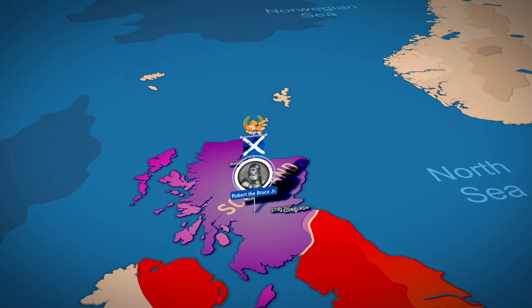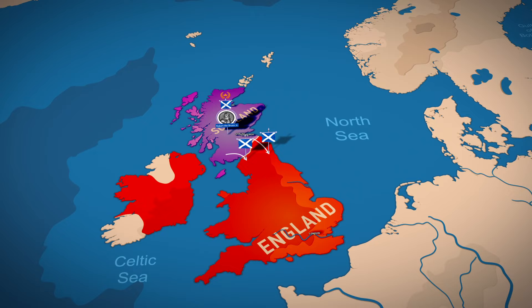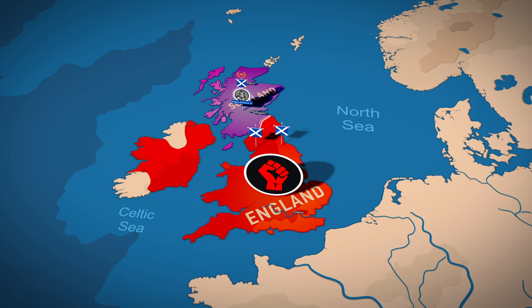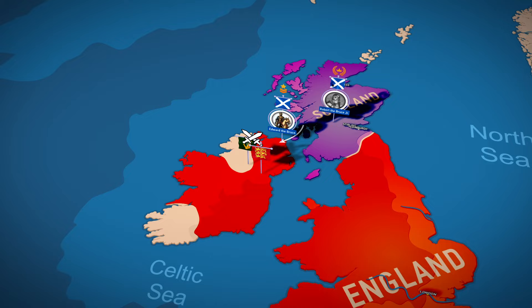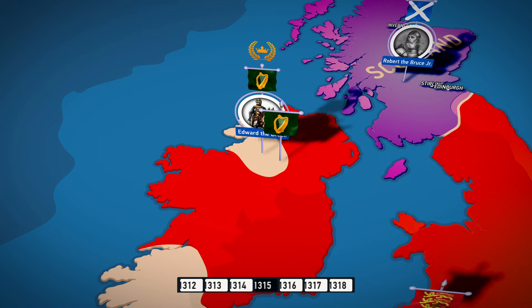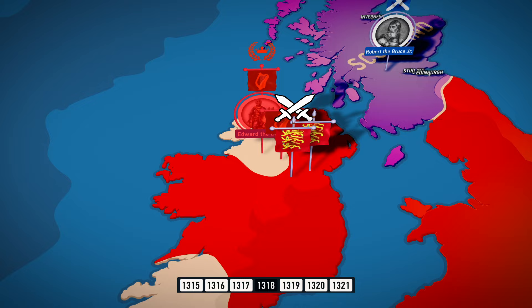This was how the Scots completely liberated their territory from the English invaders, and even made several raids into northern England. In England, revolts by aristocrats against Edward II continued, and the rebellion in Ireland weakened the English king's position even more. Robert the Bruce decided to send armed aid to the Irish, led by his brother Edward, who was soon proclaimed High King of Ireland. But three years later, Edward Bruce and his mixed Irish-Scottish army were destroyed by the English.